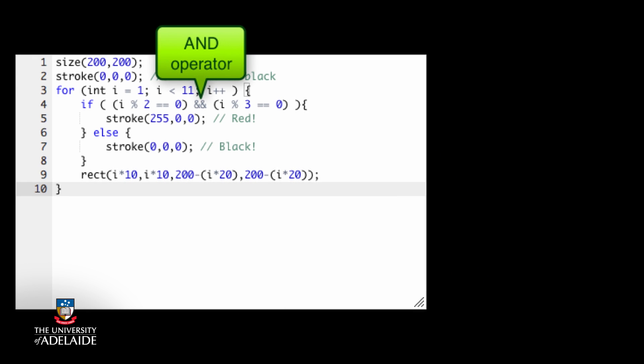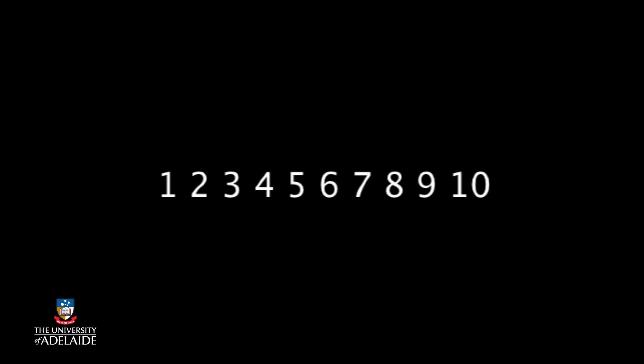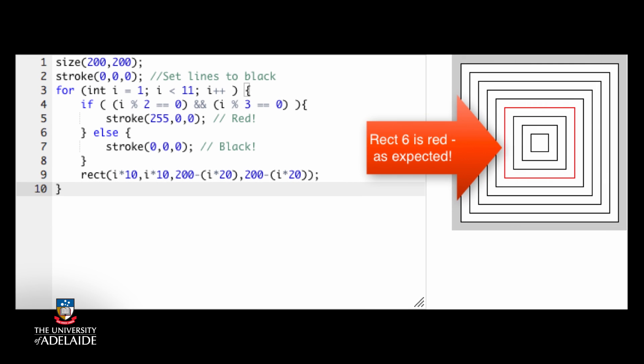Going back to our graphics code, what would happen if we said that we only wanted things to be set to red if they were divisible by both 2 AND 3? How many red rectangles do you expect to see? Well, the only number between 1 and 10 that's divisible by both 2 and 3 is 6. And this is what we see. The AND operator is more selective than the OR because it requires everything to be true.